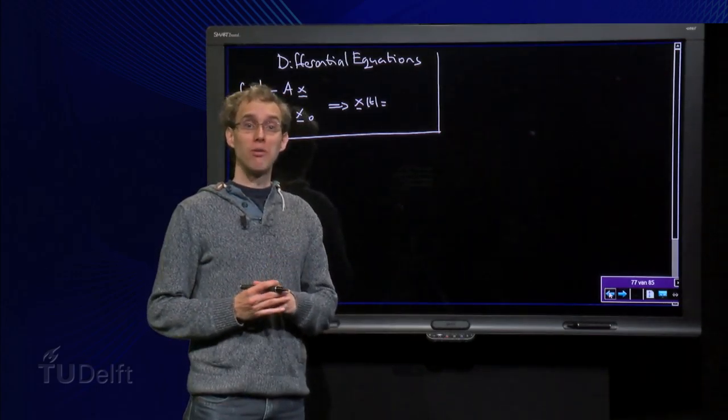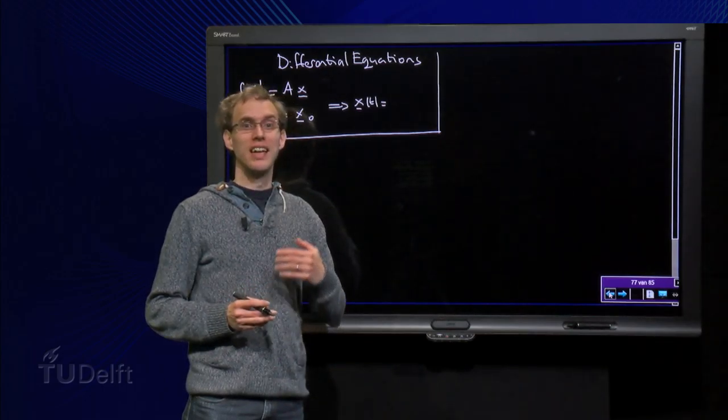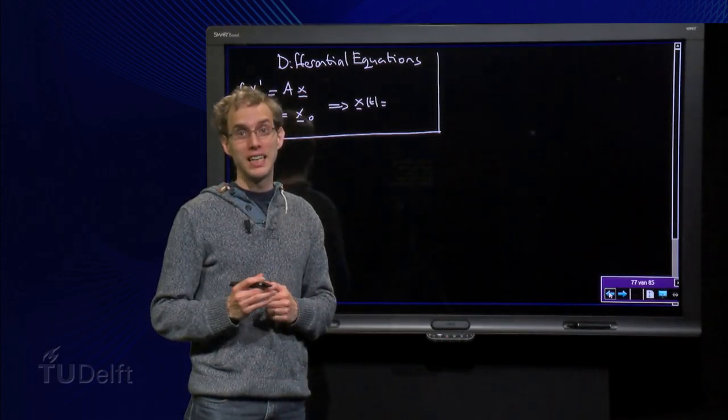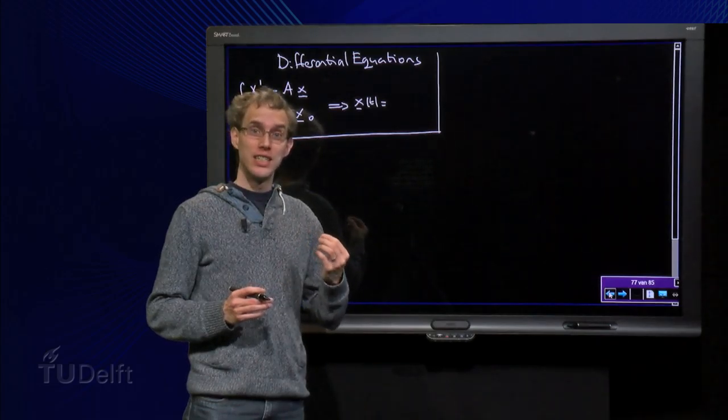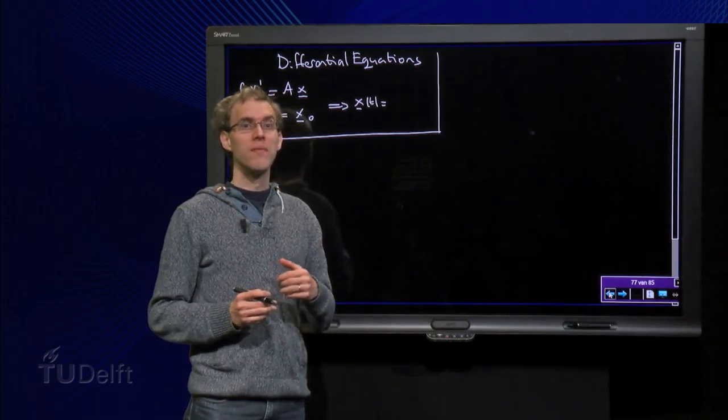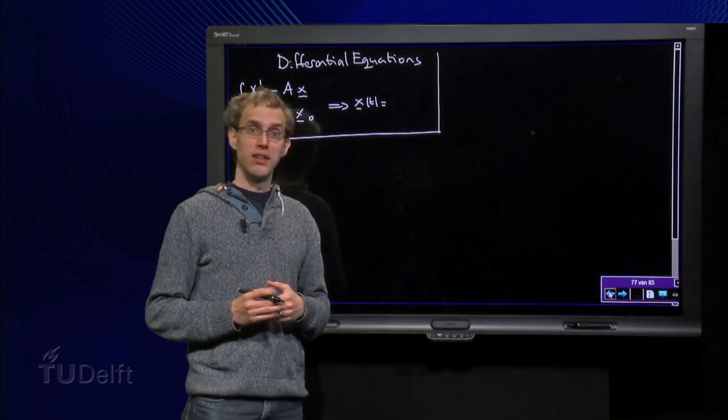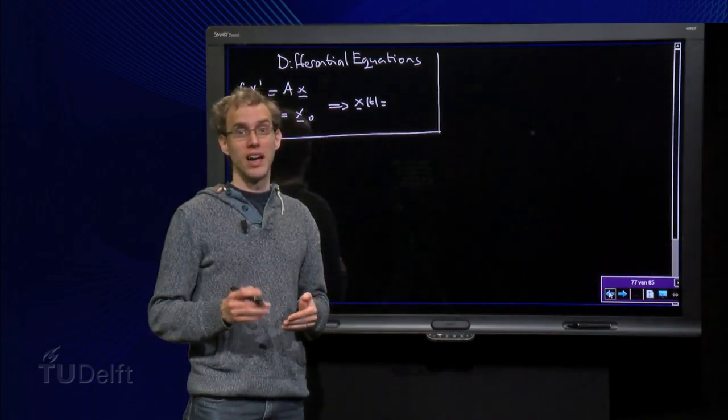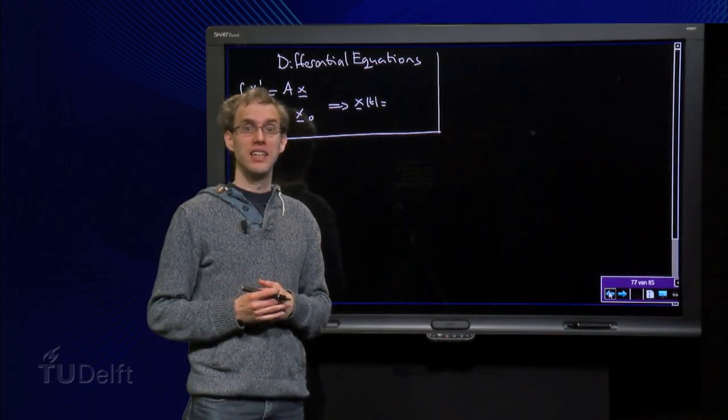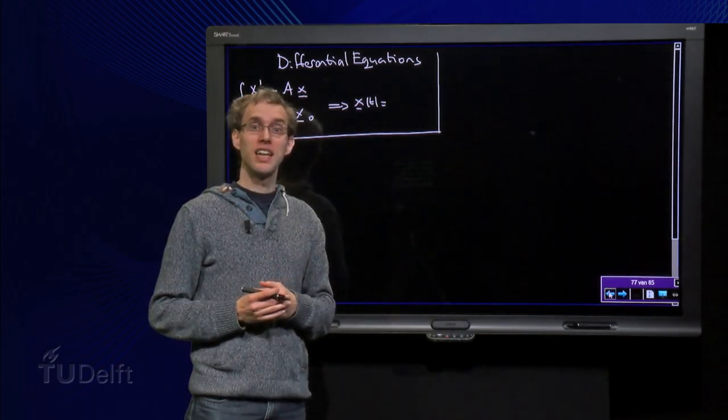You know how to solve the differential equation x' equals a times x, where x is a scalar function. In that case you find x of t equals x0 times e to the power at, where x0 is the initial condition.